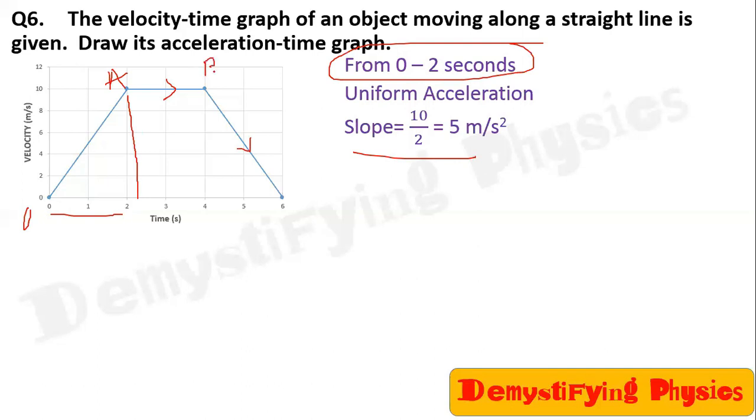Then for portion AB, the body moves with constant velocity. So acceleration is 0.